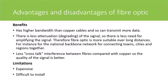Benefits of fibre optic is that it is higher bandwidth than copper cables and also can transmit more data. There is less attenuation of the signal, so there's less need for amplifying the signal. Therefore, fibre optic is more suitable over long distances. And there's less interference between the fibres compared with copper, so the quality of the signal is better. However, the main disadvantages are that it's expensive and also can be difficult to install.